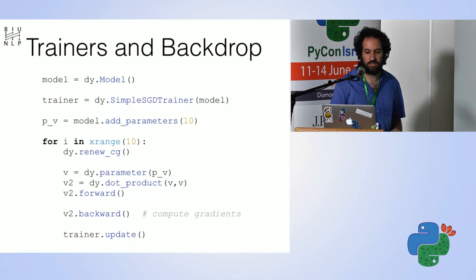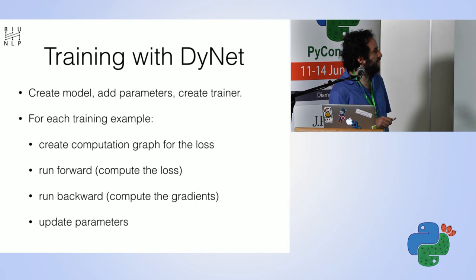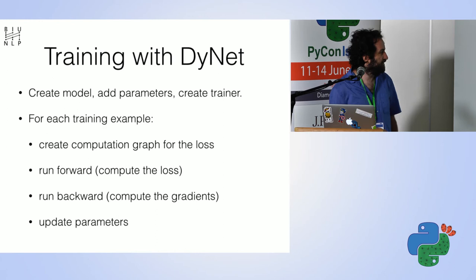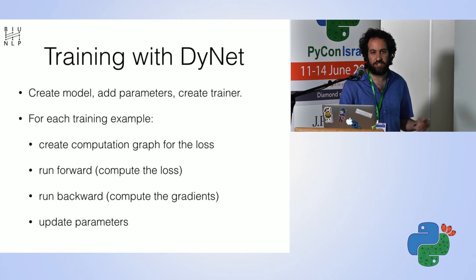To summarize: create a model, add parameters, create a trainer, and then for each example — this is really different from TensorFlow — create a graph for the loss of that example, run forward, run backward, and update. This per-example loop is the nice and easy part that I believe is much more natural to write, and without any speed penalty.